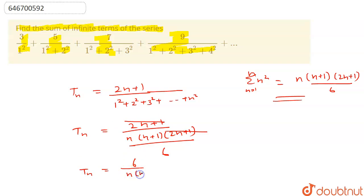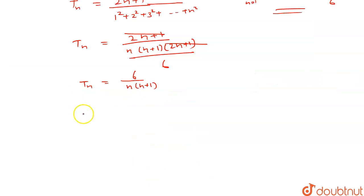Now I can write Tn as 6 into 1 upon n minus 1 upon n plus 1.